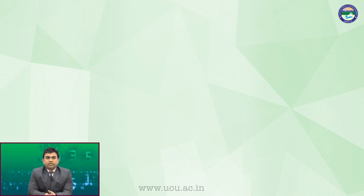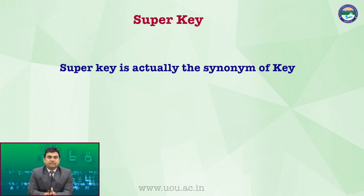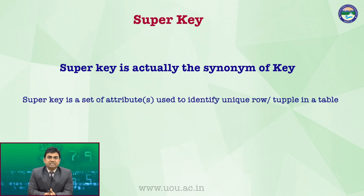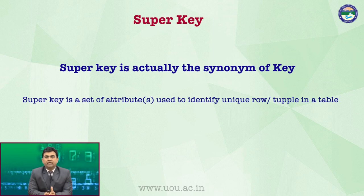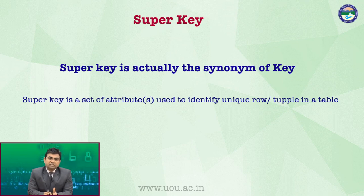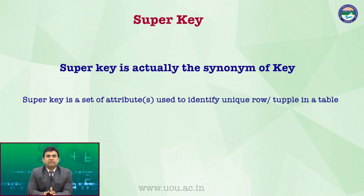Now, there are some types of keys. The first one is the super key. Super key is actually the synonym of key. The super key is a set of attributes used to identify a unique row or tuple in a table. Attribute means column — it is a property of the table. The table's properties are called A, B, C, D. The data feed is row-wise. If I have to uniquely identify the row, I will call it a super key, or I will call it a key.